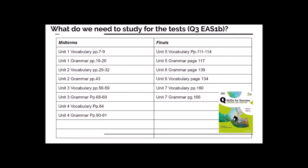This slide is about the information regarding midterms and finals. If we haven't done the midterms yet, please look at this slide and check out the pages and units that need to be covered. For the midterms: units 1, 2, 3 and 4. In unit 1, vocabulary is on pages 7 to 9 and grammar is on pages 19 and 20. For the finals, we are doing units 5, 6 and 7, and you can see all the pages outlined there for grammar and vocabulary.